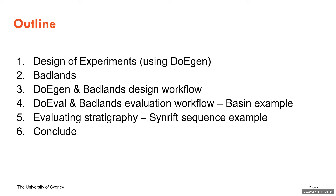I'll run through how I've integrated Doogen and Badlands, and hopefully convince you that it's something we should be doing more often. I'll demonstrate that the tools I've put together are a good start on evaluating outputs from multiple experiments. I'll explain how Doogen works and some key concepts you should understand before using it, give a quick overview of Badlands, then show two example workflows. The first uses a standard Badlands library example from GitHub, and the second evaluates the SYNRIFT sequence in the Otway Basin using curve matching modules to identify the best experiments.